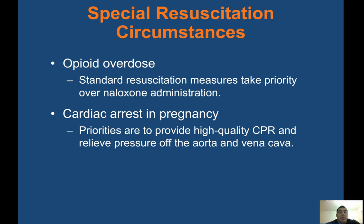Special resuscitation circumstances: for opioid overdose, standard resuscitation measures — CPR — take priority over naloxone (Narcan) administration. Start CPR first to get blood flowing; you have about four to six minutes before serious injury occurs. Still administer Narcan if it's a known overdose, but get compressions going first. In cardiac arrest during pregnancy, priorities are high-quality CPR and relieving pressure off the aorta and vena cava — there are two patients, so continue CPR to give the baby a chance.